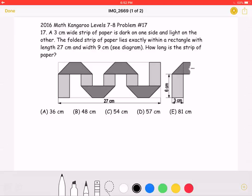How long is the strip of paper? A) 36 cm, B) 48 cm, C) 54 cm, D) 57 cm, or E) 81 cm.